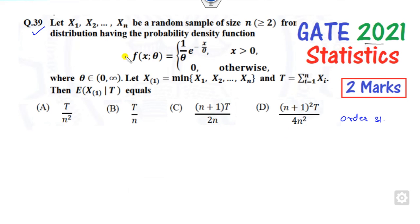You have to apply the shortcut tricks. You need to find the expected value. All of you know how to find the expected value - it's X times PDF. So it means we